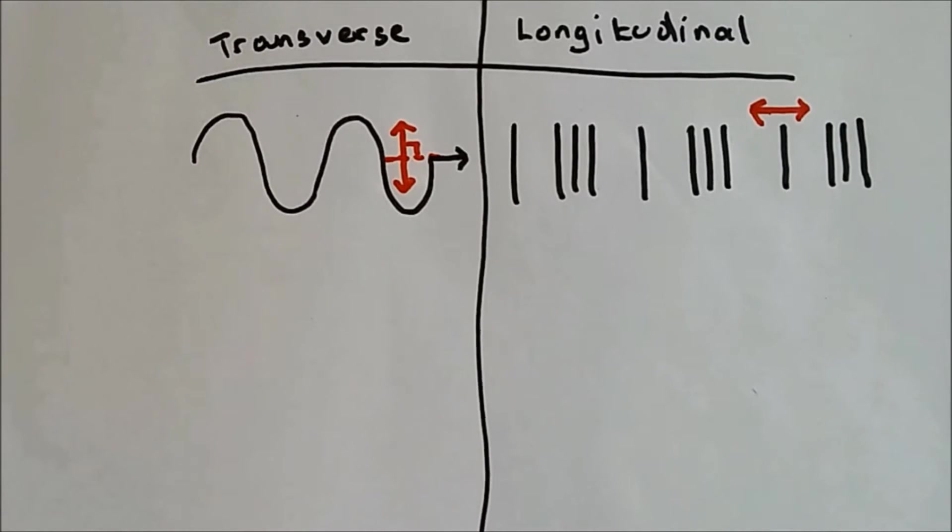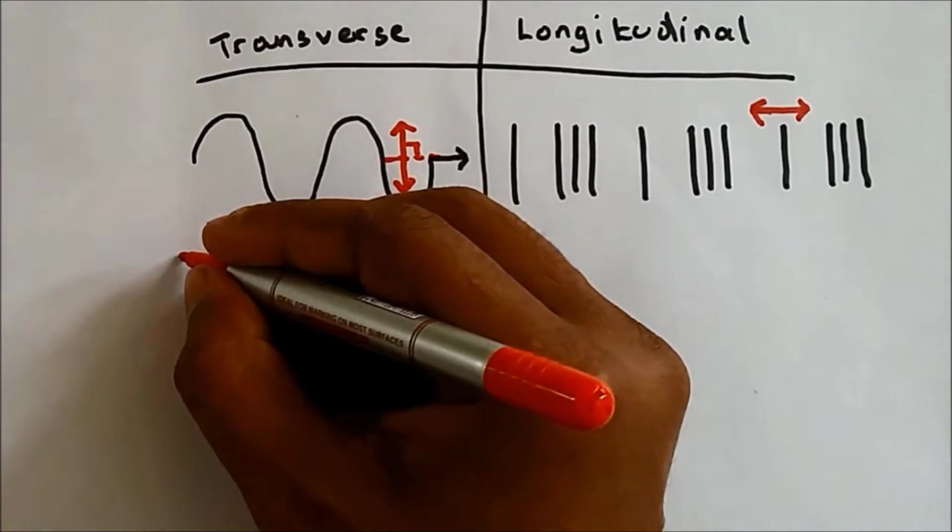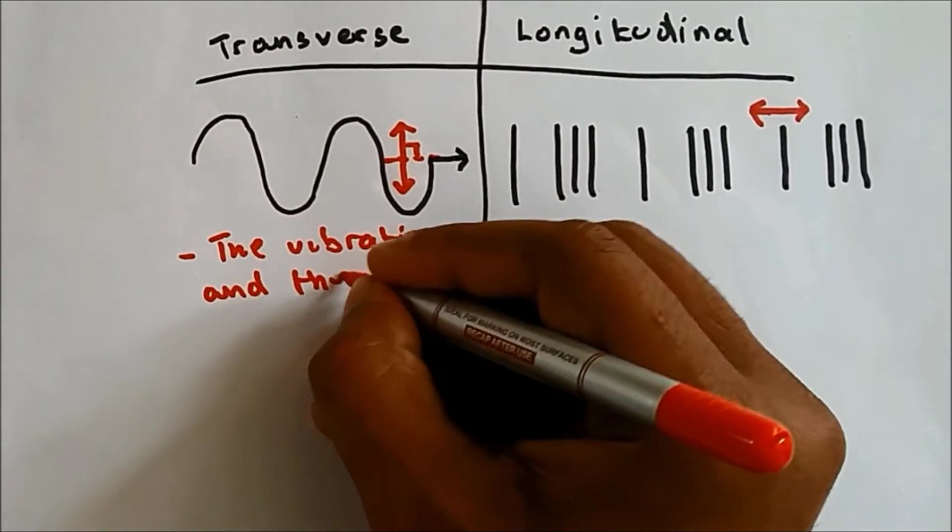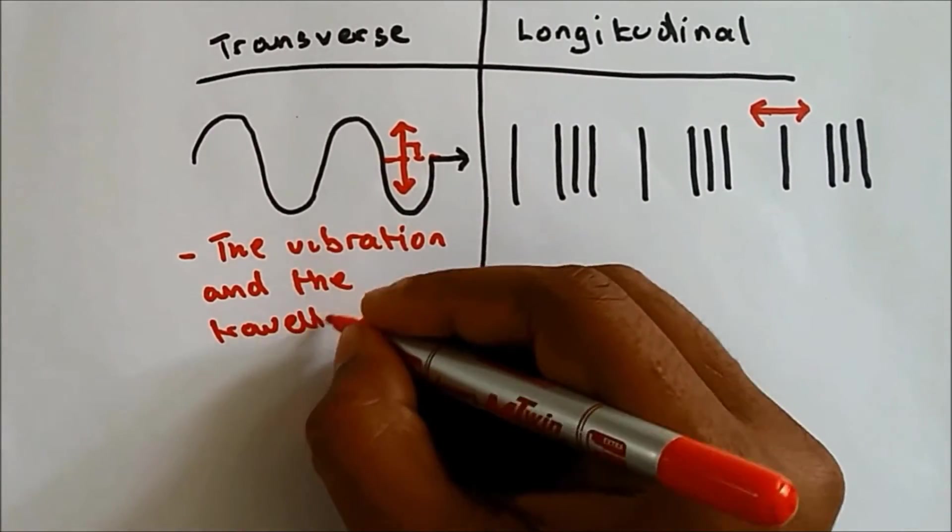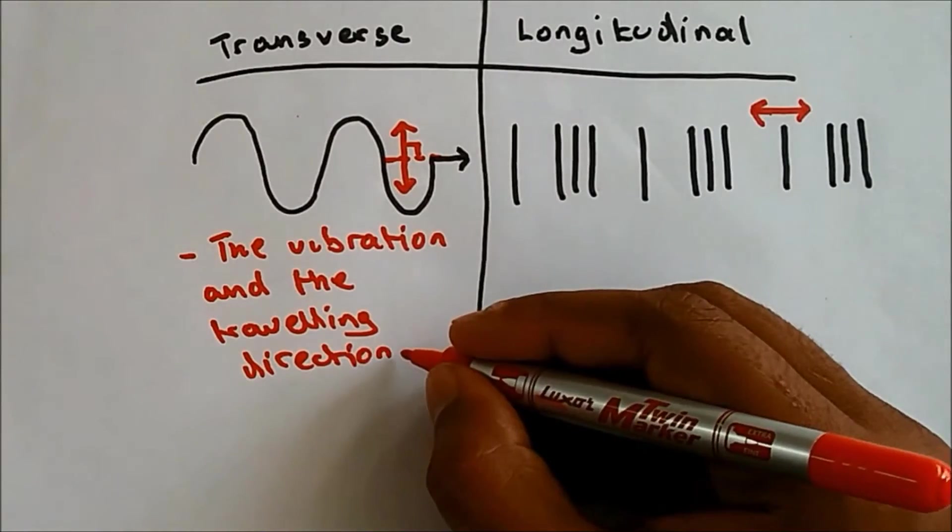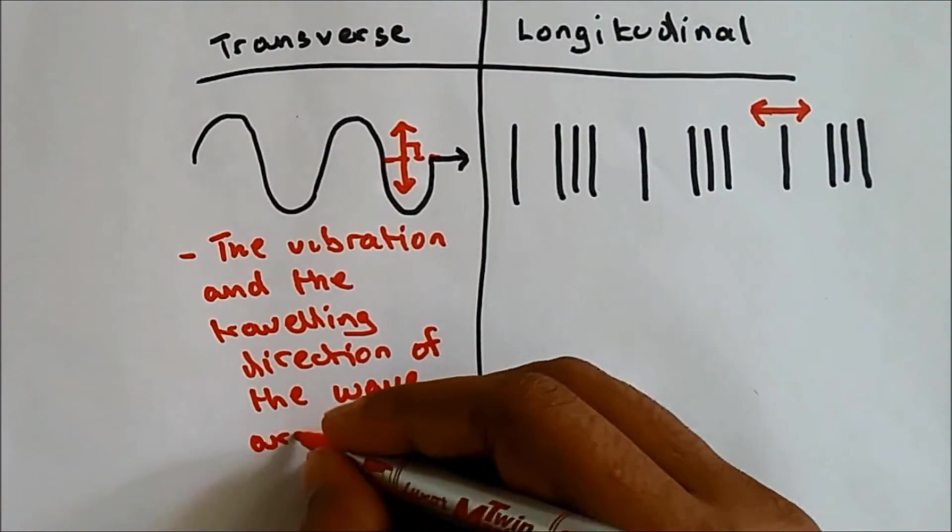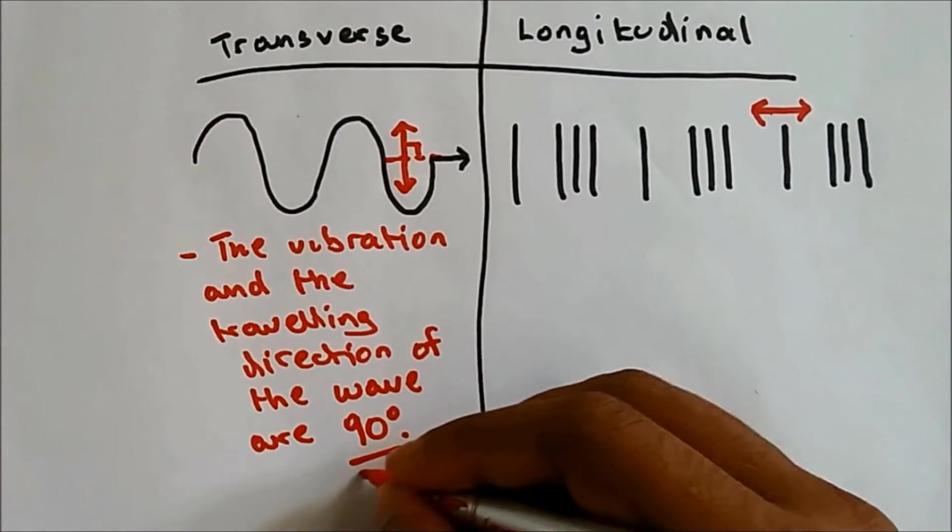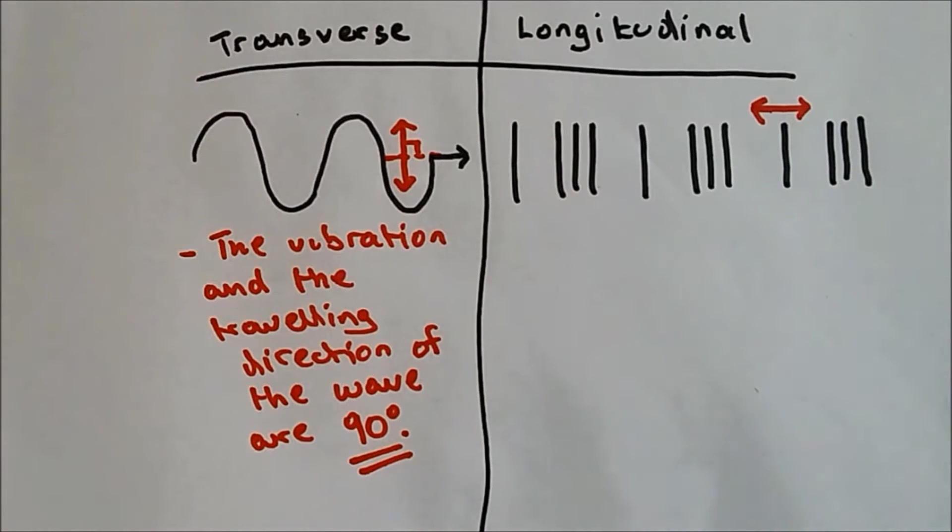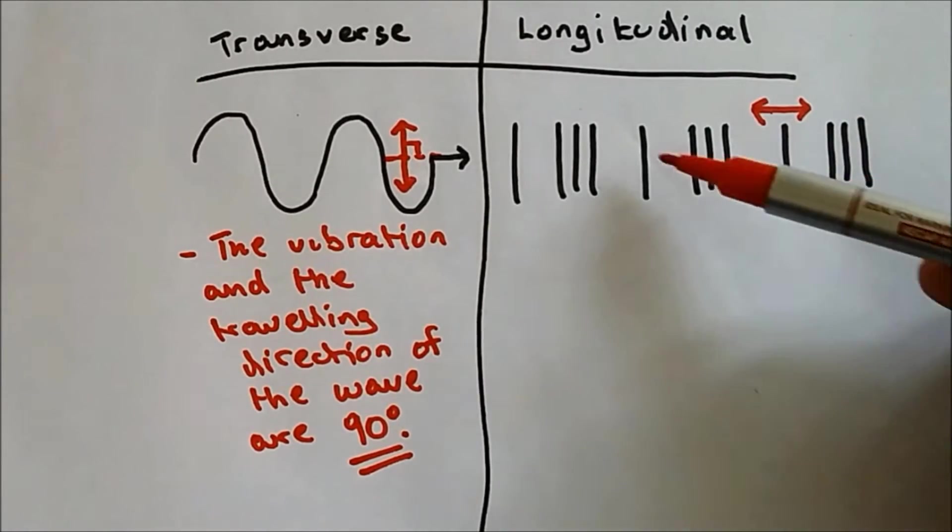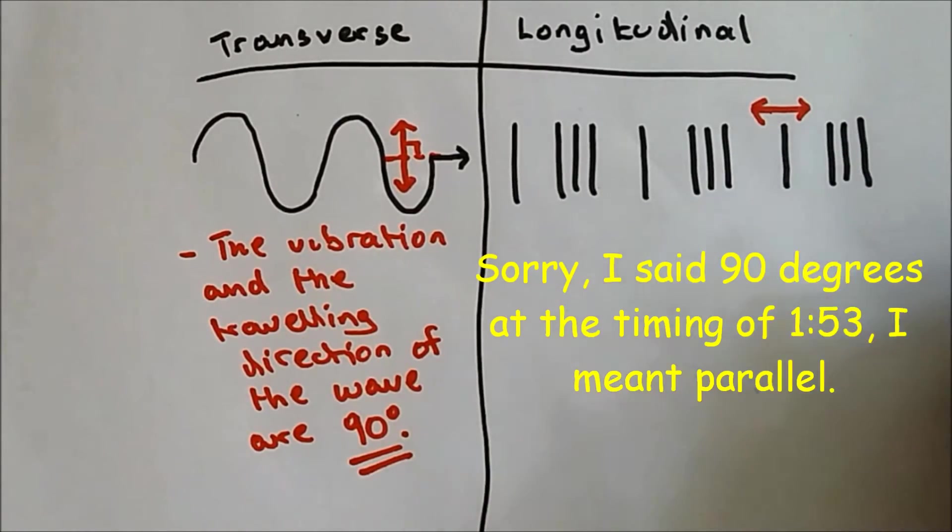So the definition of transverse wave is the vibrations and the traveling direction of the wave are 90 degrees. And the definition for longitudinal is similar to this, but it's not 90 degrees, but they are parallel.